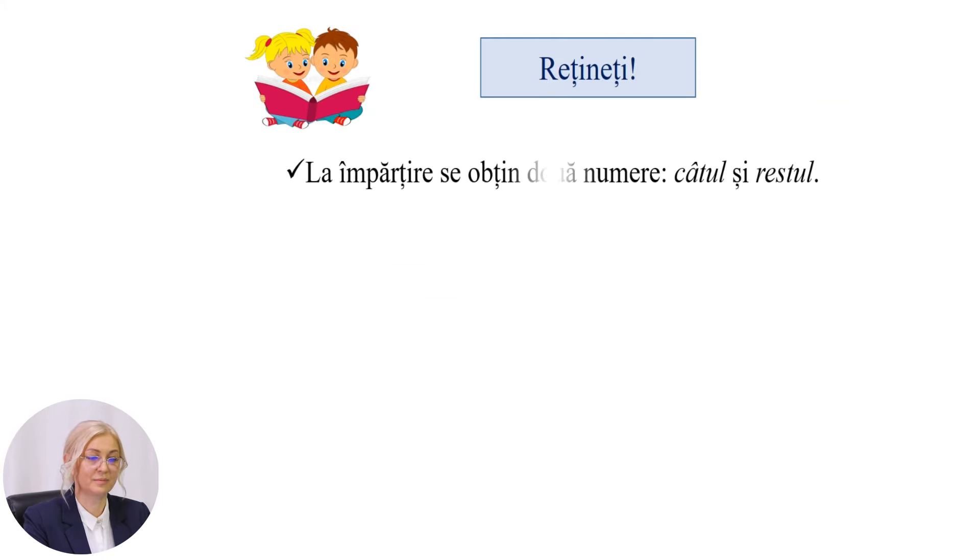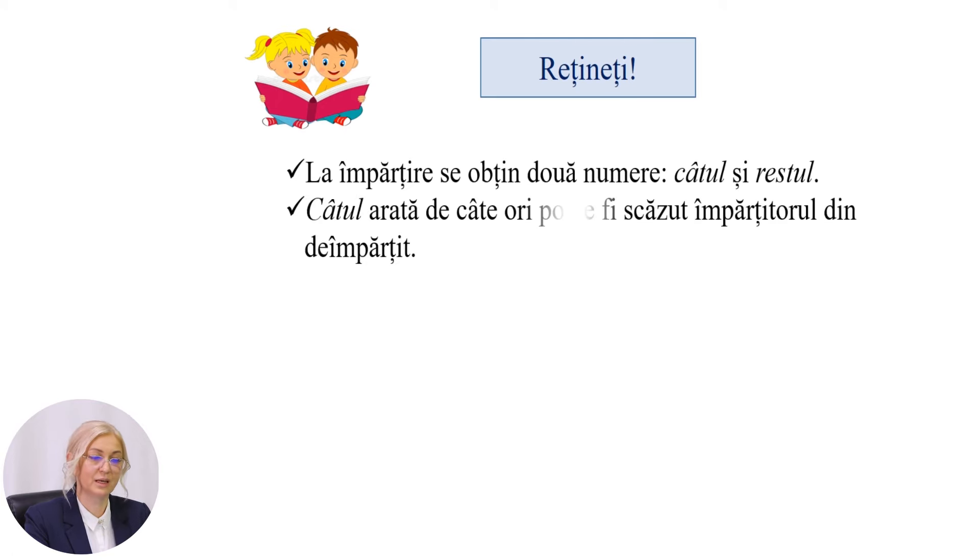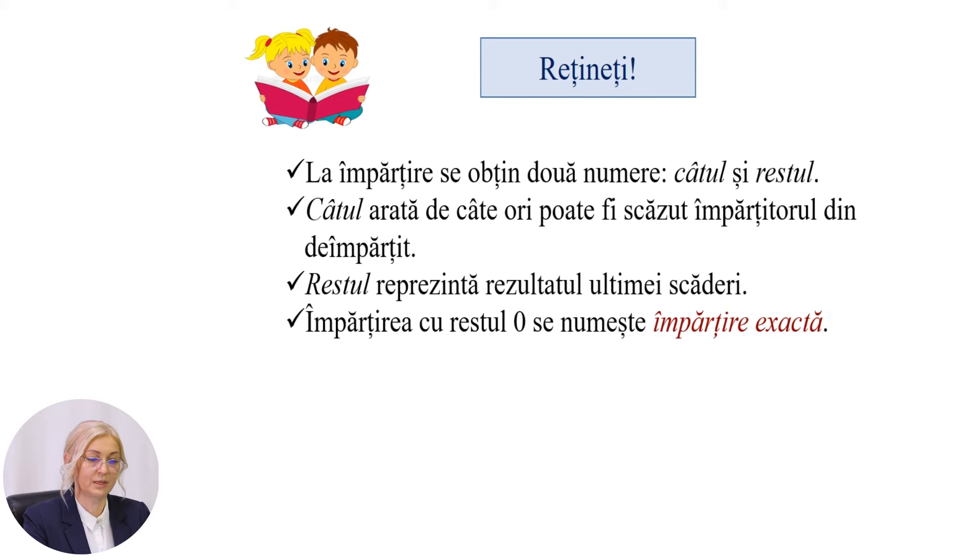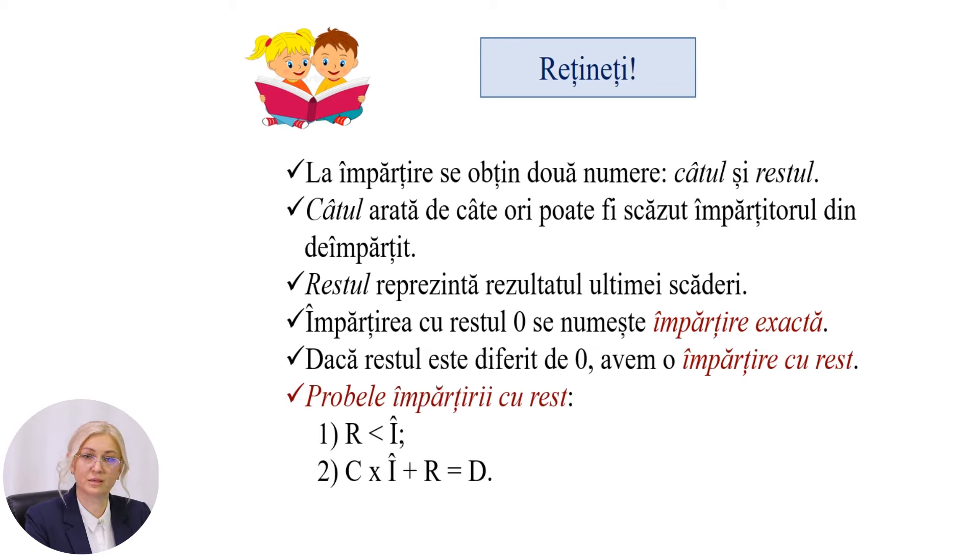Rețineți. La împărțire se obțin două numere, câtul și restul. Câtul arată de câte ori poate fi scăzut împărțitorul din de împărțit. Restul reprezintă rezultatul ultimei scăderi. Împărțirea cu restul 0 se numește împărțire exactă. Dacă restul este diferit de 0, avem o împărțire cu rest. Probele împărțirii cu rest sunt următoarele: Restul trebuie să fie mai mic decât împărțitorul. Și proba a doua: câtul înmulțit la împărțitor plus restul obținem de împărțitul.